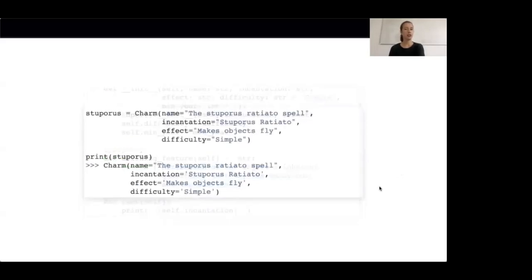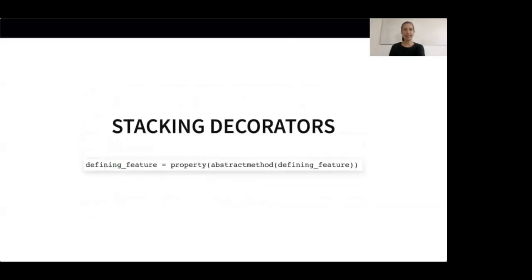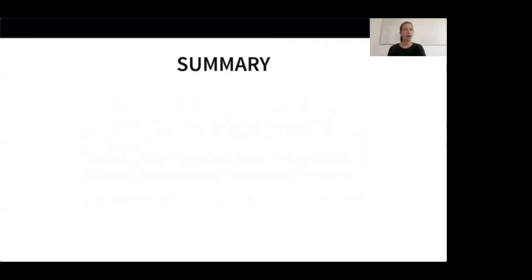You might notice another new thing in the code: we stacked two decorators, in this case the @property decorator and the @abstractmethod decorator. When stacking decorators, it's important to know that they are applied from bottom to top. According to the Python docs, @abstractmethod when used in combination with other methods should be applied as the innermost decorator. So keep that in mind when stacking multiple decorators. ABCs allow us to formalize the relationship between a parent class and a subclass. They serve three purposes: first, they let a parent class communicate that subclasses should have a certain structure; second, they allow classes to identify themselves as meeting the demanded requirements; third, they enforce that a subclass meets the requirements, otherwise throwing an exception at instantiation time.